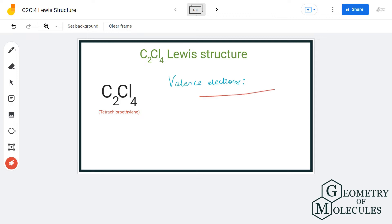Here we have two carbon atoms, both of them have four valence electrons in its outer shell, and we have four chlorine atoms, and each chlorine atom has seven valence electrons in its outer shell. So in total we have 36 valence electrons for this molecule.